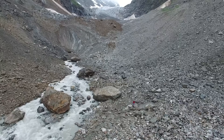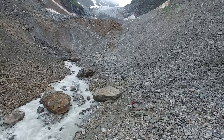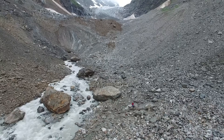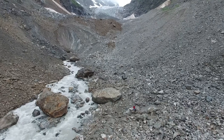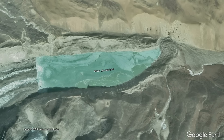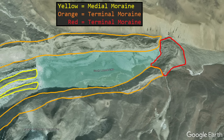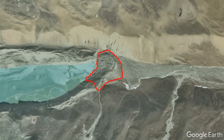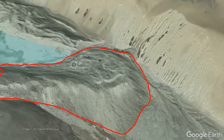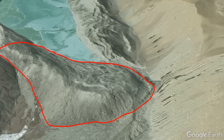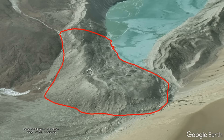As these glaciers retreated, they left behind large amounts of loosely consolidated rock in what is known as a moraine. The South Lonack Glacier specifically created three such moraine types, with a terminal moraine forming the very end of the glacial lake that would develop, acting as a natural dam.